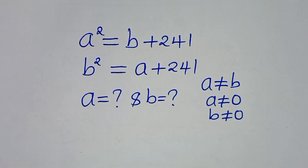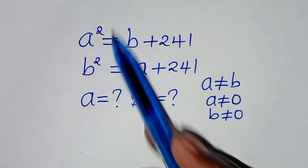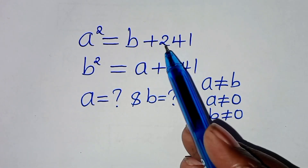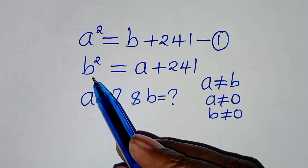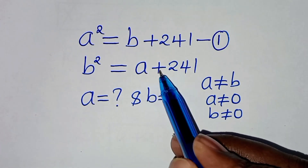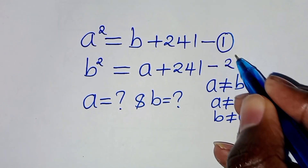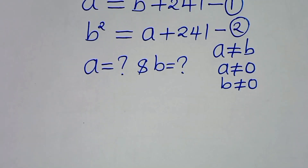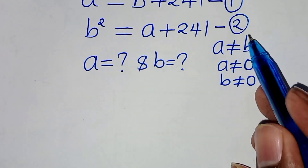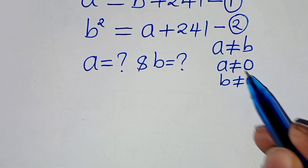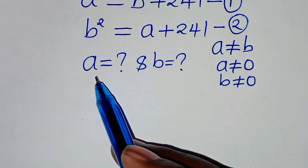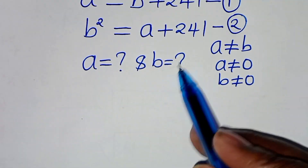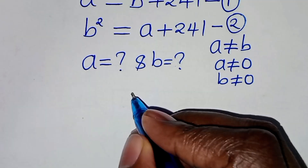Hello everyone, welcome. We need to solve this algebra problem: a squared equals b plus 241 — call this equation 1 — and b squared equals a plus 241 — call this equation 2 — such that a is not equal to b, a is not equal to 0, and b is not equal to 0. We need to find the values of a and b.